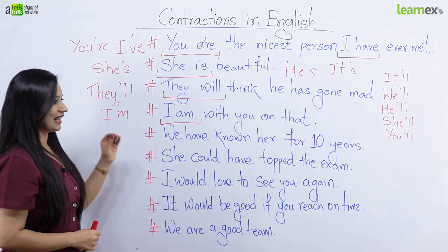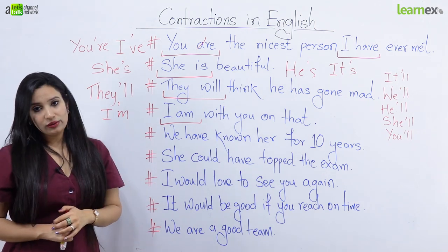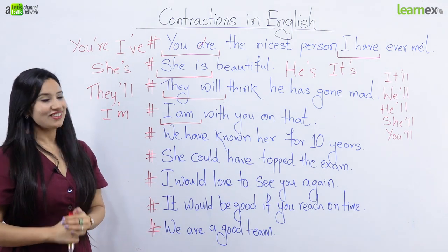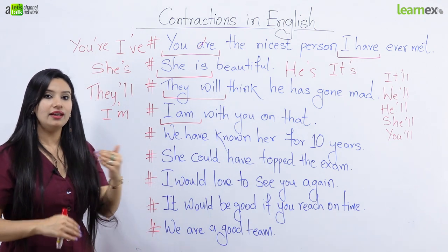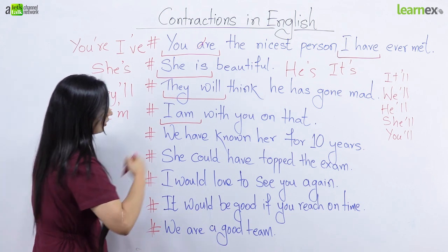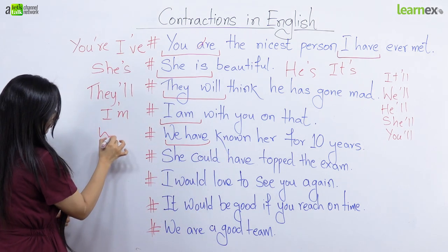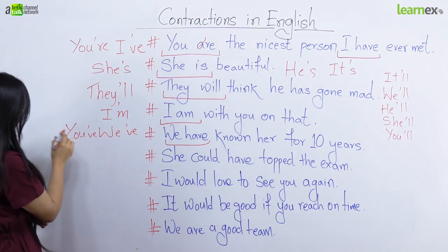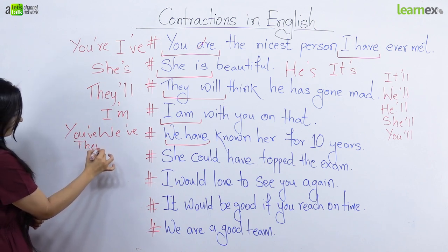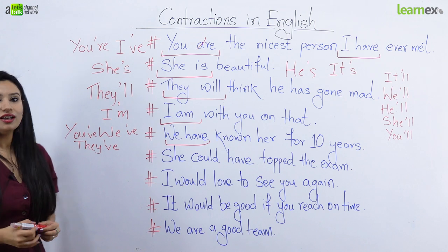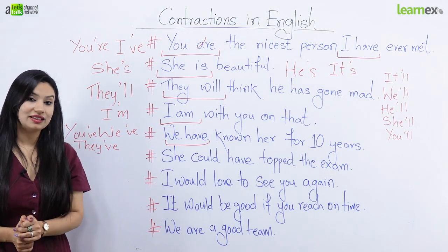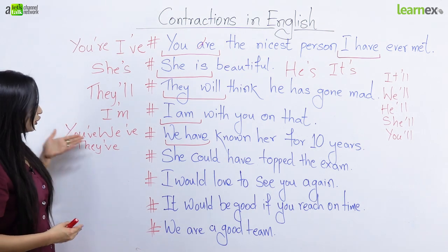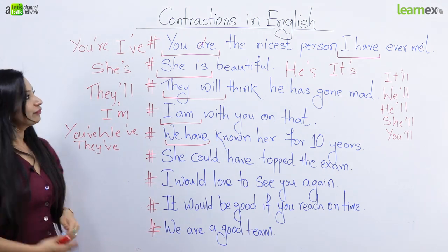Ab dekhte hain humara agla sentence: 'We have known her for 10 years.' Issse bahut milti julti, maine ek contraction abhi board par aapke liye already kar diya — bataiye kaun si? I've. Jaise hum kehte hain I've, subject badal ke hum keh sakte hain: we've, you've, they've. Toh I, we, you, aur they ke saath hum 'have' ka istemal karte hain. Repeat after me: we've, you've, they've, I've.